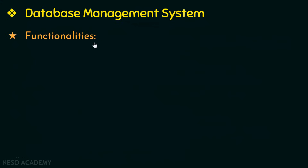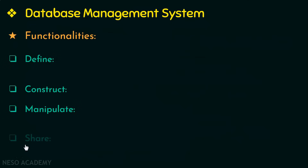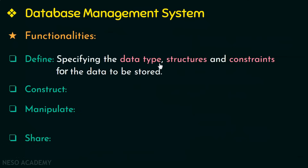Now let's look into the functionalities of a database management system. DBMS allows users to define the database, to construct the database, and to manipulate and share the database. Defining the database involves specifying the data type for the data to be stored, as well as specifying the structures and constraints for the data. Constraints are limits on the data — for example, if age is the data to be stored, a constraint like 'age greater than 18' means only data meeting that condition can be stored.